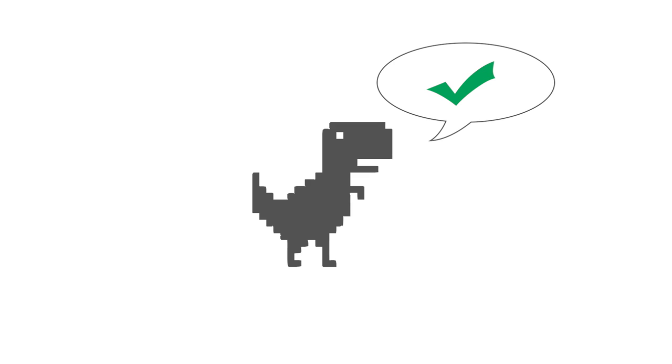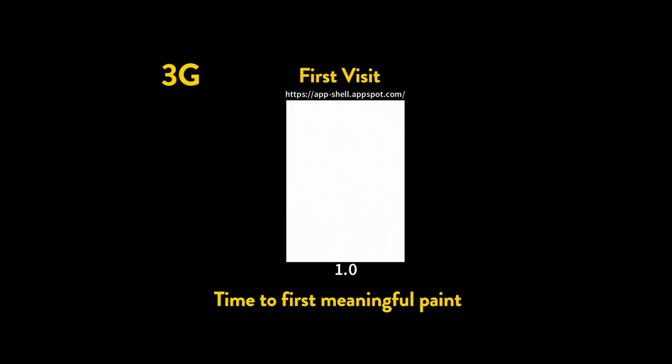We've done some performance testing with the application shell model using Web Page Test. On first visit, we've got a relatively fast time to first meaningful paint. This is super important because there can be scenarios where someone might take advantage of service worker and say, don't worry about your first load — I'm just going to serve up megabytes of stuff that I'm going to cache. But if that first load takes so long that the service worker doesn't even get registered, that's pointless.